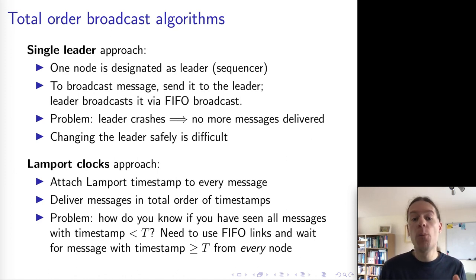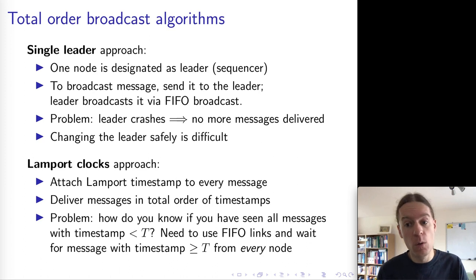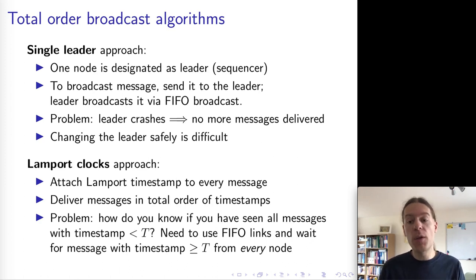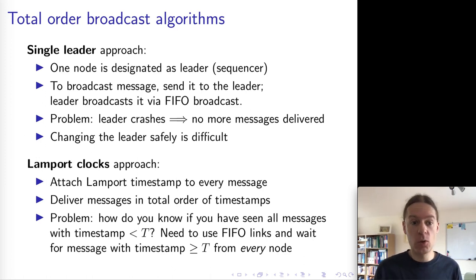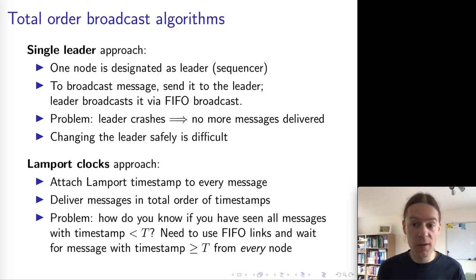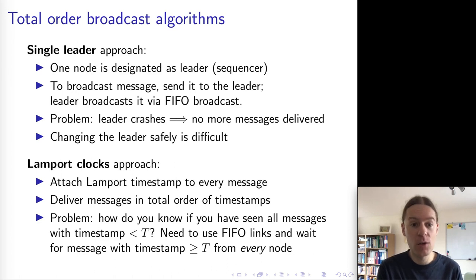It is possible to know that there will not be any future messages with a timestamp below some threshold. If we use FIFO links between the nodes, then we know that each node sends messages in increasing order of Lamport timestamp, and we receive those messages in increasing order. So if we've heard from every other node, the minimum timestamp we've seen across any of the other nodes is the minimum we'll ever see. Based on that, it is possible to create total order broadcast. Unfortunately, this approach is not fault tolerant, because if just one node crashes it will not be sending any more messages — so Lamport timestamps won't move forward and no messages get delivered. So these two algorithms do work, but neither of them is fault tolerant. In a later lecture, we will see ways of achieving total order broadcast in a way that is fault tolerant.